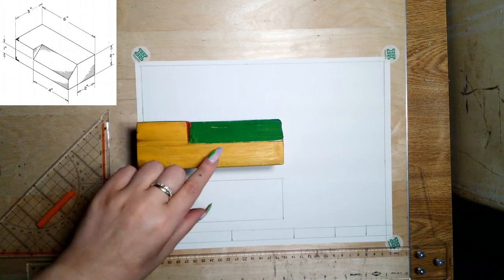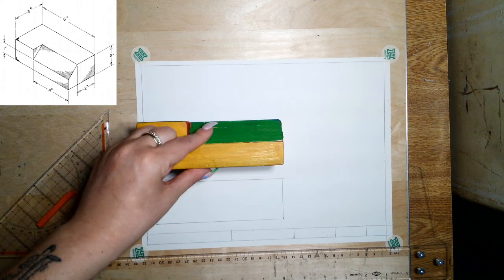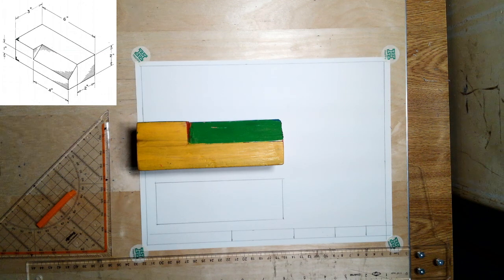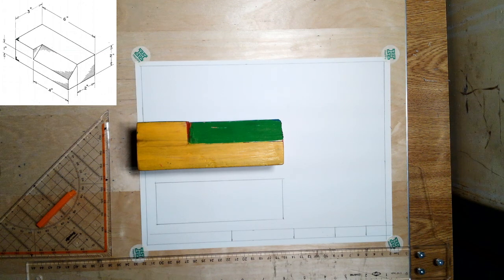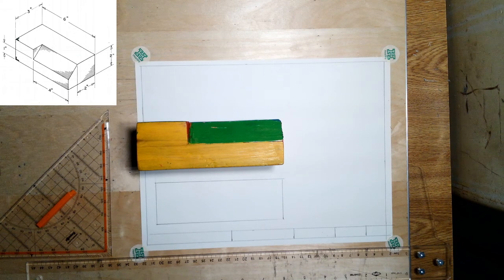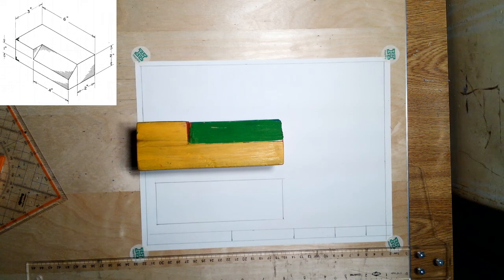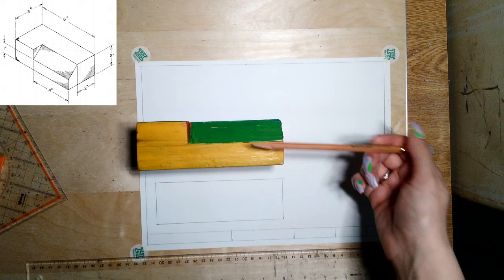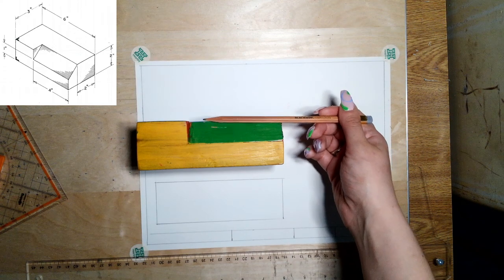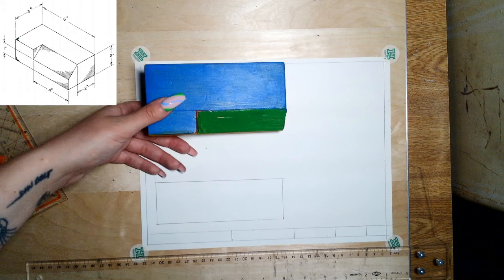Now when it comes to slanted surfaces or inclines, they have a little bit of a technique to them in drawings. I mentioned this in the previous video where we just kind of went over what orthographics are. But incline surfaces tend to appear as foreshortened in particular views. So what that means is this little incline here is going to be visible in the front view as well as when we draw the top view.